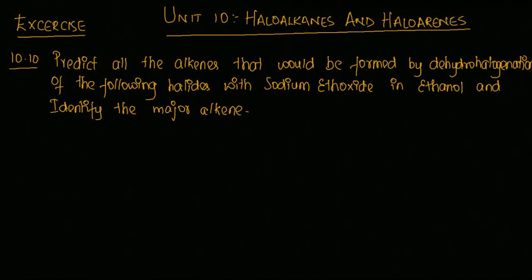Question 10.10: predict all alkenes that would be formed by dehydrohalogenation of the following halides with sodium ethoxide and ethanol, and identify the major alkene. Dehydrohalogenation means removal — 'de' means removal, 'hydro' means removing a hydrogen, and 'halogenation' means removing a halogen. Through this process, you remove hydrogen and a halogen to form alkenes.